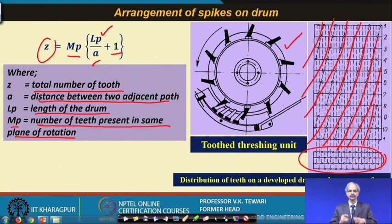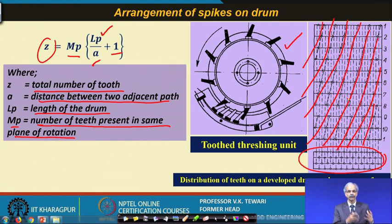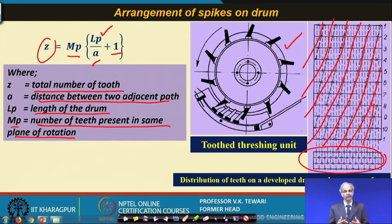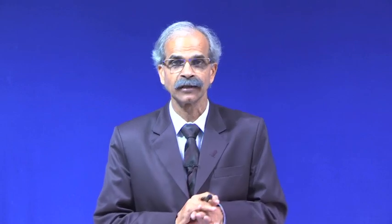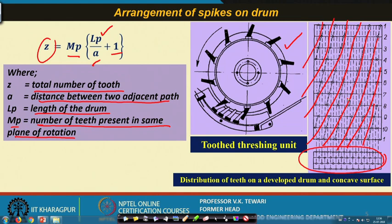If you get an opportunity to see the unit yourself in a laboratory or at your location, you will be able to understand and appreciate the arrangement of the spike tooth. Otherwise the threshing will not be proper — you will not get clean grains, and the straw will not be properly removed from the grains.